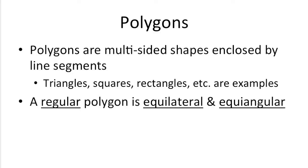When you see something called a regular polygon, that just means that they're equilateral, which means that all the sides are the same length, and equiangular, which means that all the angles are the same.